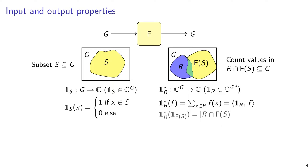In particular for this example, what we will do is make a function that maps a given function F to the average of that function over the set R, up to multiplication by the size of R. And this can also be expressed as taking the inner product of the indicator function of R with F. So if we apply that function to the indicator function of F, then indeed we get the size of the intersection between R and F.